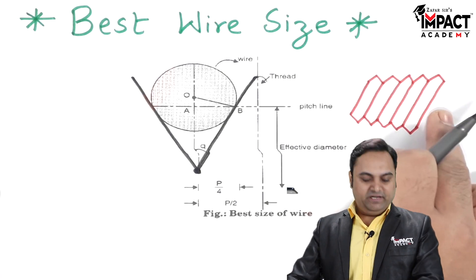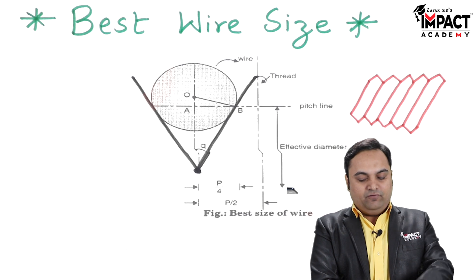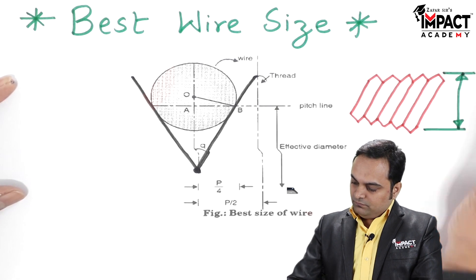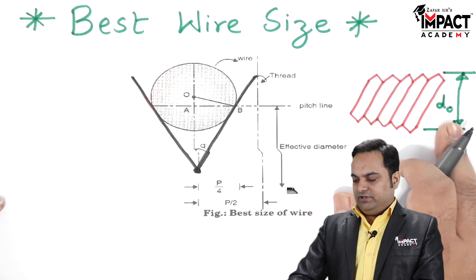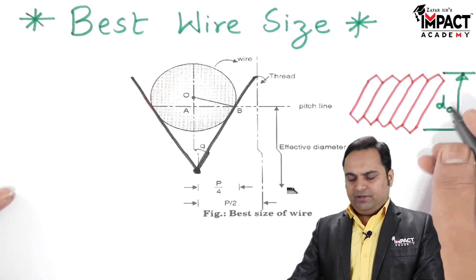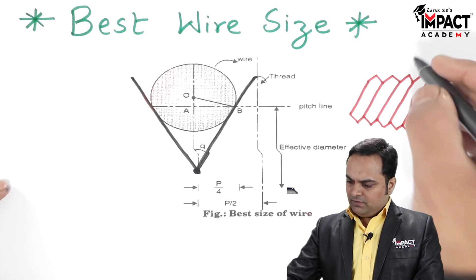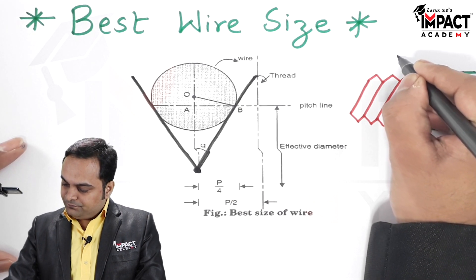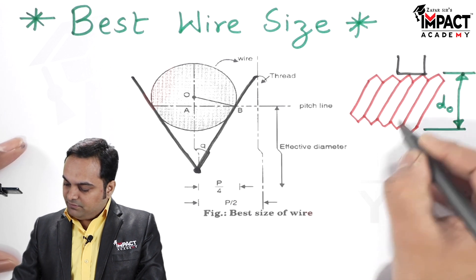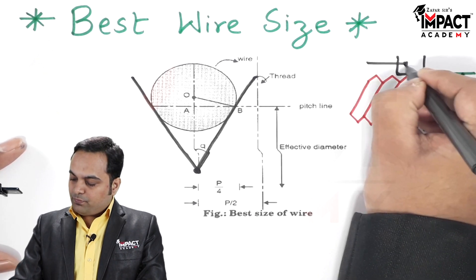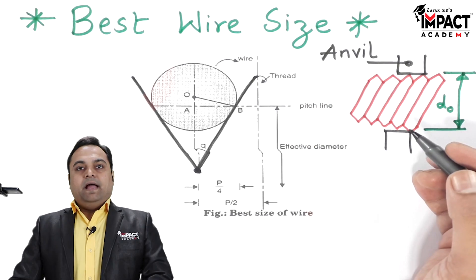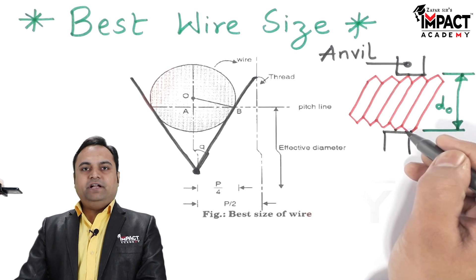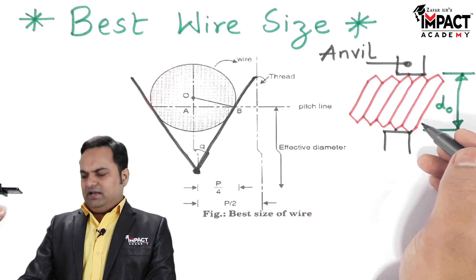Now this is the screw thread profile, and suppose if we want to measure the outer diameter of the screw indicated by the suffix O, that is the nominal diameter. For that we are using the floating carriage micrometer, and in that micrometer there are anvils in the cylindrical shape, as can be seen over here.